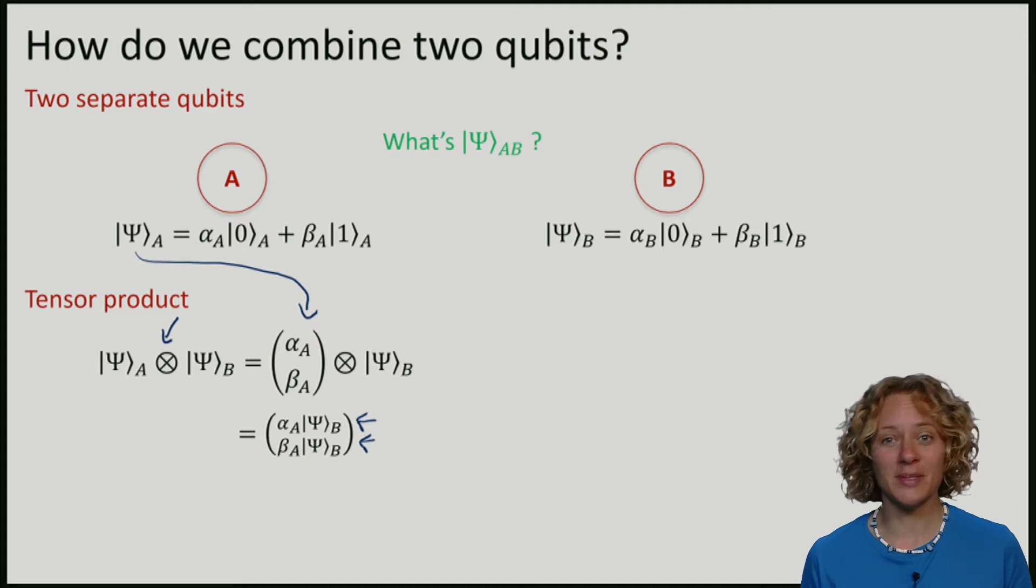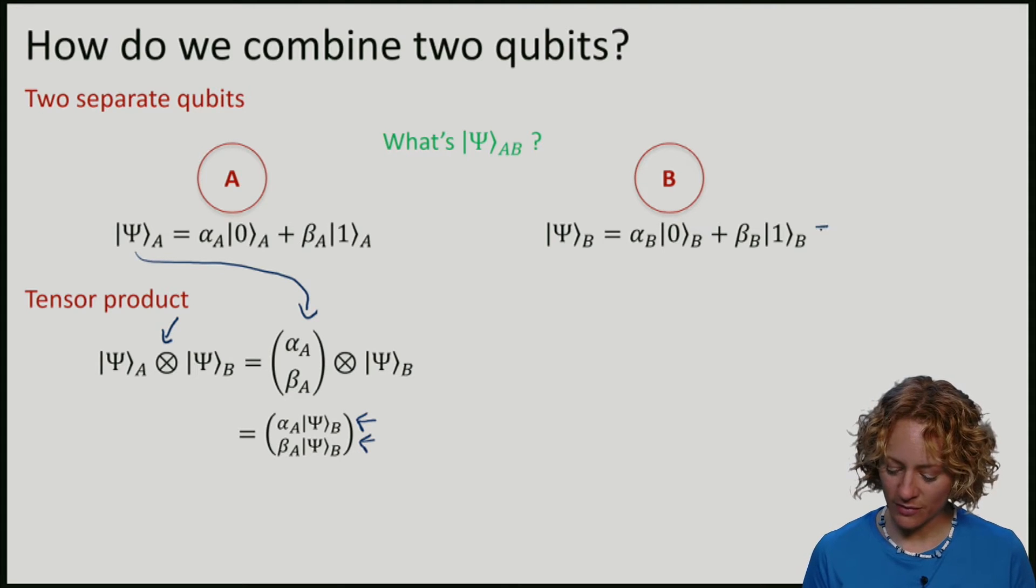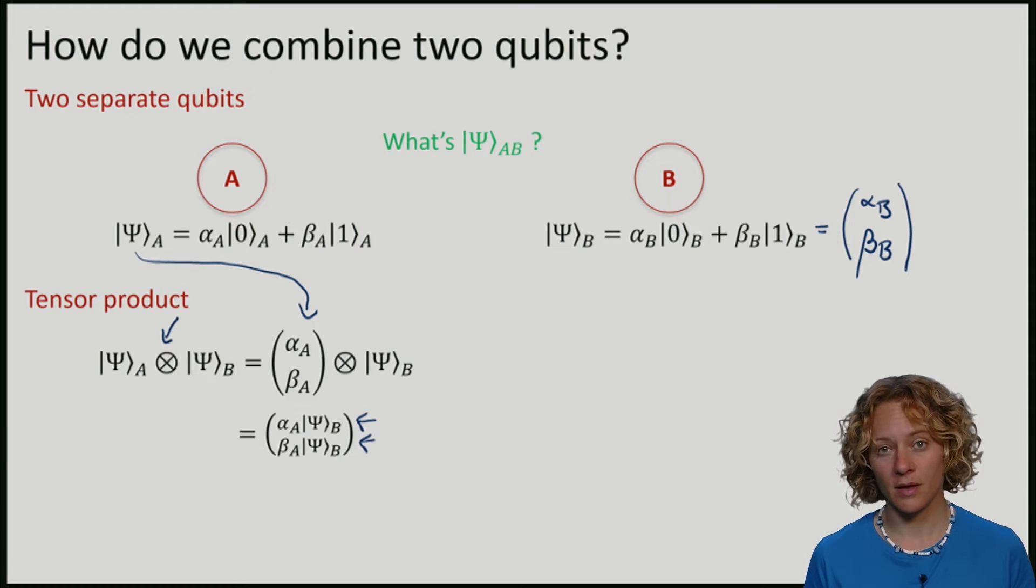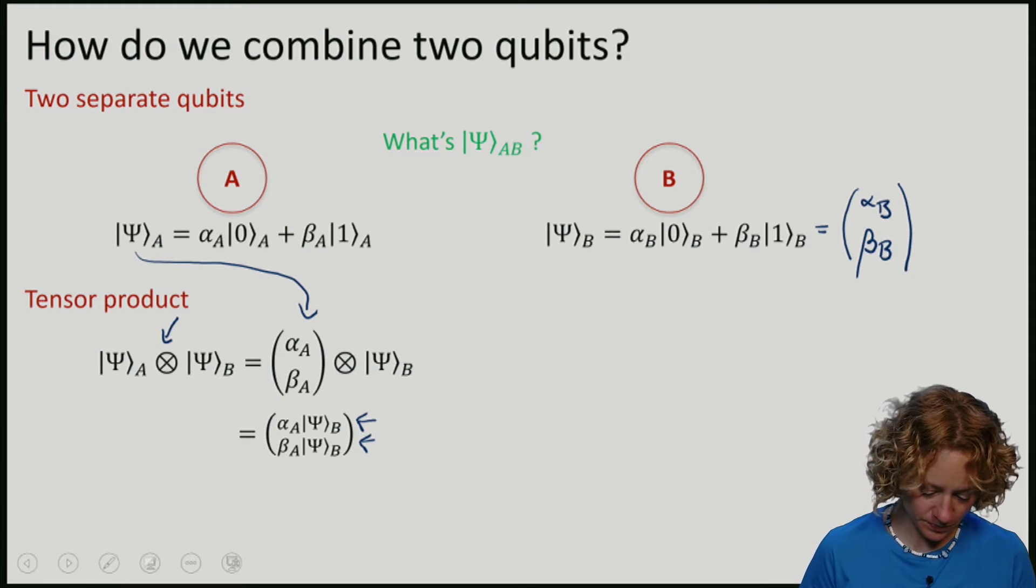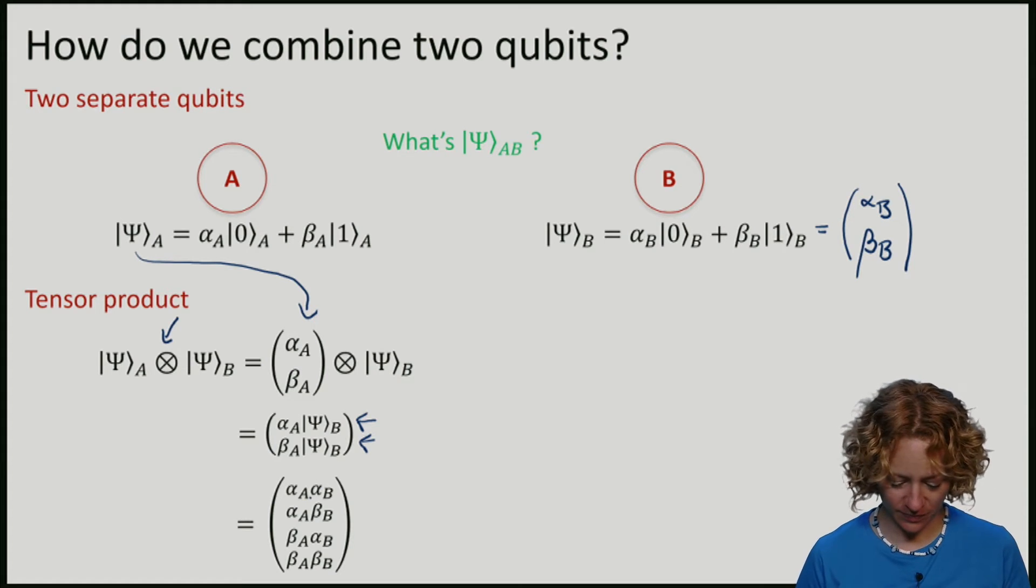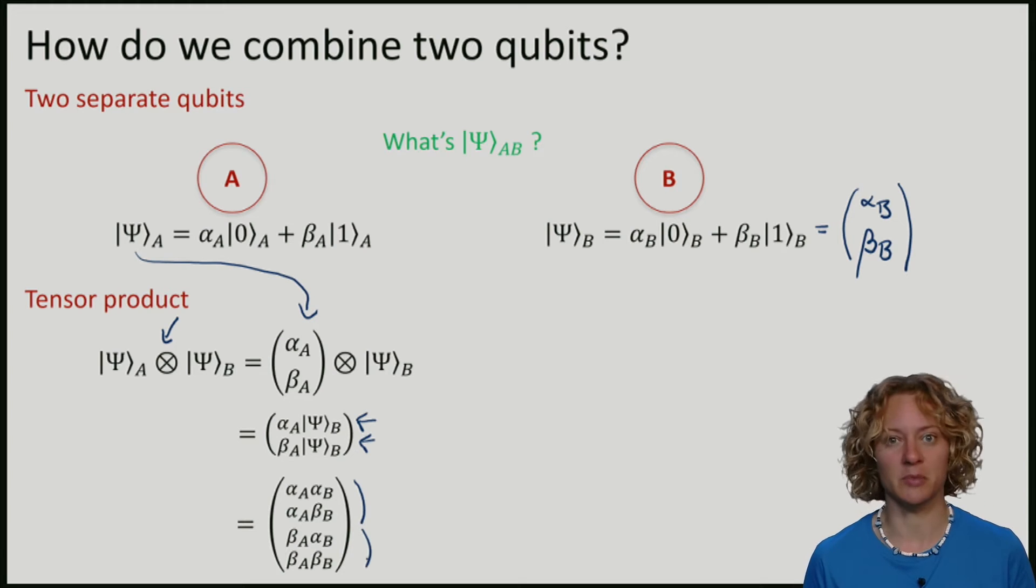To see what this means exactly, let me actually expand the vector psi b. So what I get here is alpha a times alpha b, alpha a times beta b. And then I get beta a times alpha b, and beta a times beta b. That's how we can combine two separate qubits.